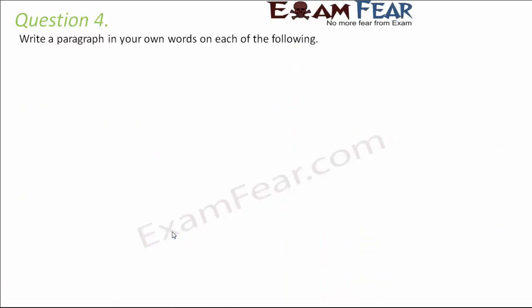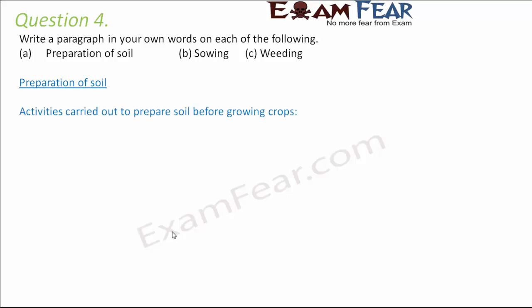Question number four: write a paragraph on each of the following — preparation of soil, sowing, and weeding. Let's see how to write quick notes. Preparation of soil: everything needs preparation before the actual work, and similarly, soil also needs to be prepared by farmers. The following activities are carried out to prepare the soil before growing crops.